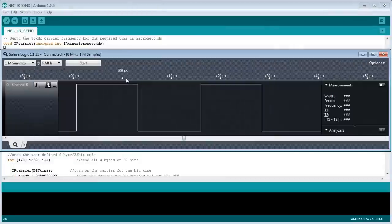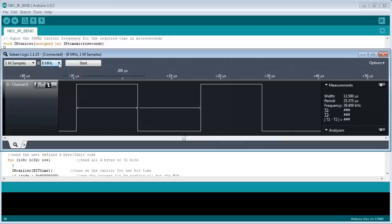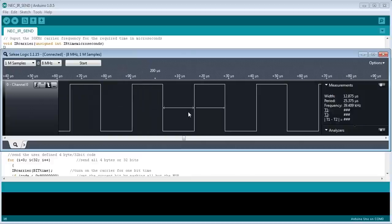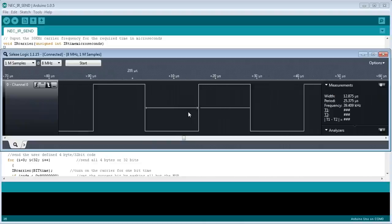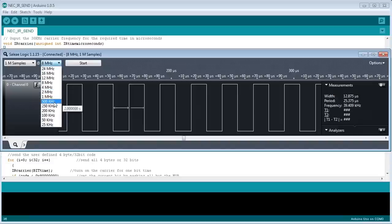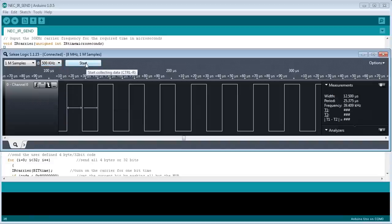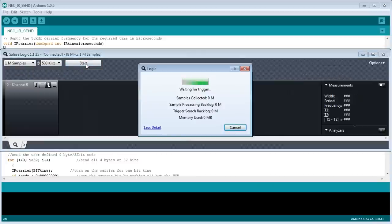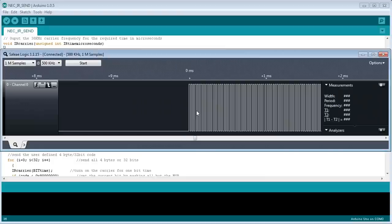And just a small trap for young players here, with any sampling system like this, the resolution is going to be dependent upon your sample rate. Now we're sampling at 8 megahertz here, and you'll notice that it's over on the right hand side there, it's saying the pulse width is giving us that to 3 decimal places, or 1 nanosecond resolution. Well, that's obviously complete bullshit, it's saying it's 12.875 microseconds. It's not possible to get 1 nanosecond resolution on that, but 8 megahertz is more than good enough to get the timing requirement for this particular application. But let's re-sample that at, say, a lower rate of 500 kilohertz.